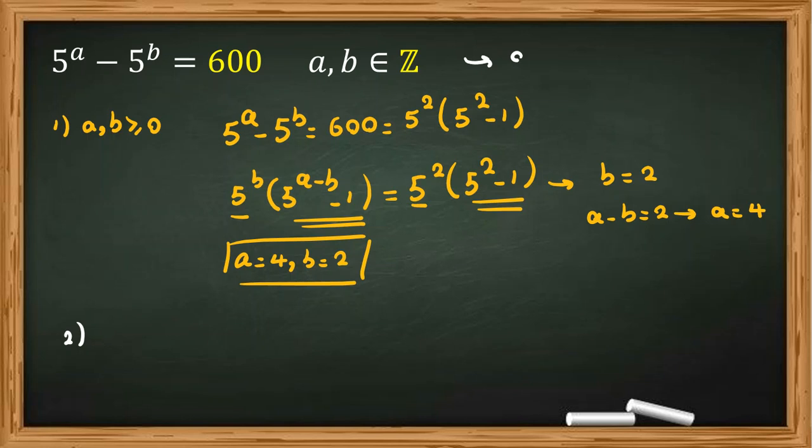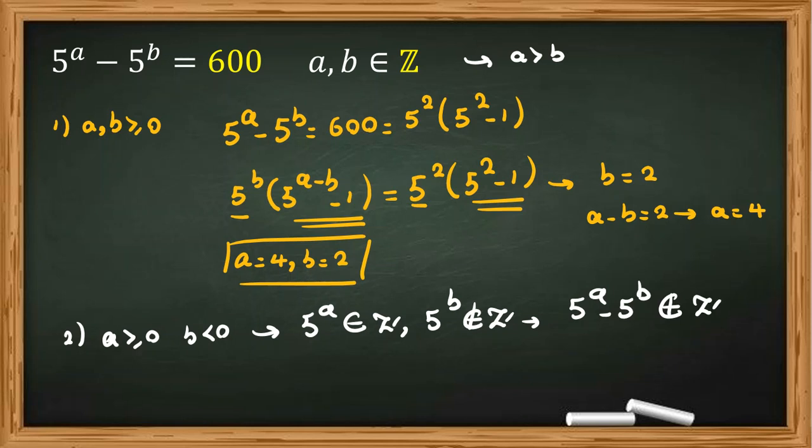From here, we know that A should be greater than B because 5 to the A minus 5 to the B is positive. So if A is at least 0 and B negative, then we conclude 5 to the A is an integer, and 5 to the B is not integer. So 5 to the A minus 5 to the B, integer minus a non-integer number, is not integer. That's a contradiction because it is 600.